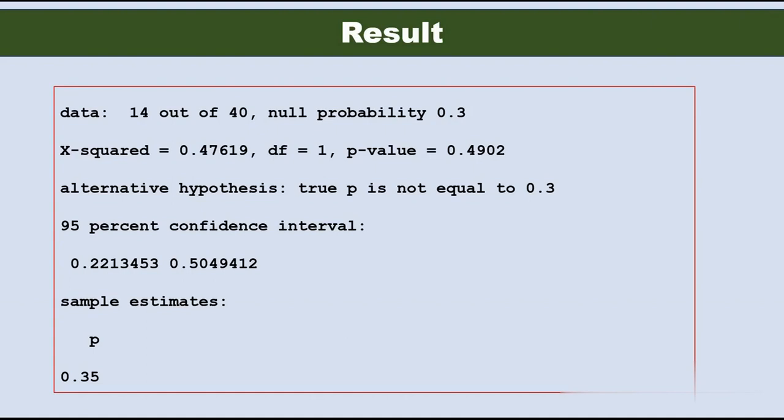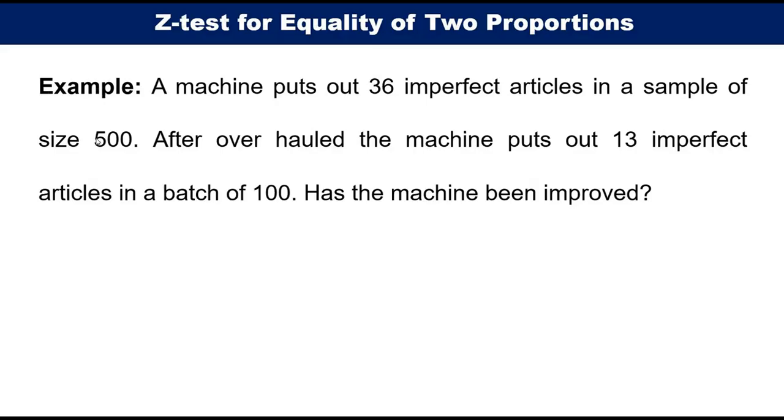Let's go to the z-test for equality of two proportions. Here I am taking one example of z-test for equality of two proportions. Here we determine whether the machine has been improved. We can compare the proportion of imperfect articles in the two samples before and after the overhaul. The first sample size is 500 and after the overhaul the base size is 100, and proportion is 36 and 13.